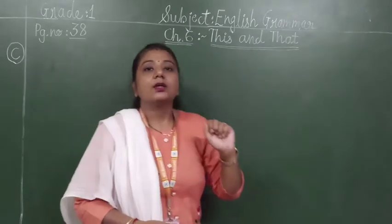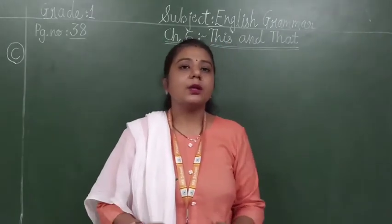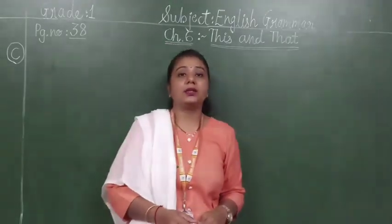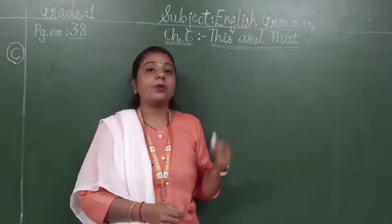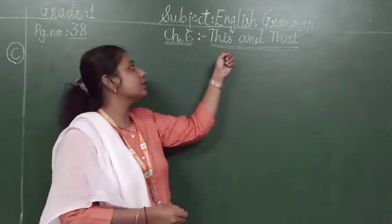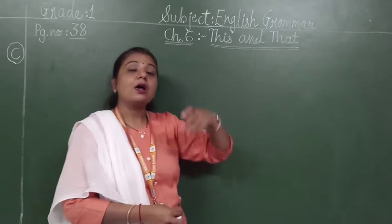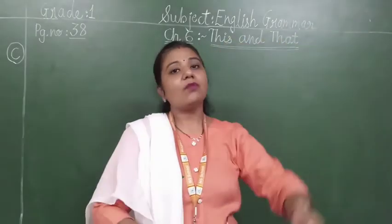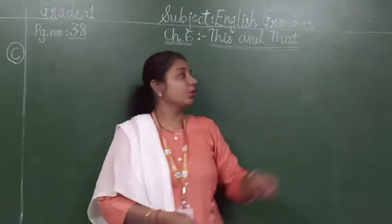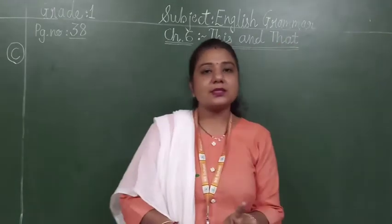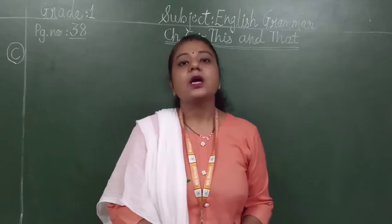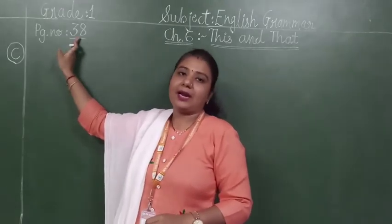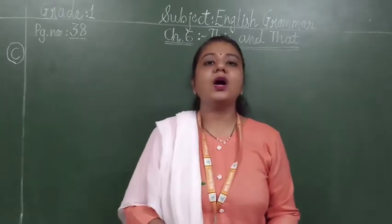Students, 'this' — kab hum use karenge? The things, the places which are nearby us, jo hamare paas mein hoti hai. For example, 'this is a chalk' jo mere paas hai. And 'that' which are far from us — 'that is a window,' 'that is a fan' — we have to use 'that'. We have already done exercises A and B. Today we will do exercise C on page number 38, grammar and textbook. So, let's do our exercise.